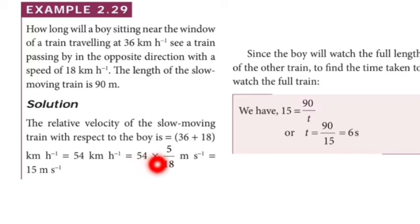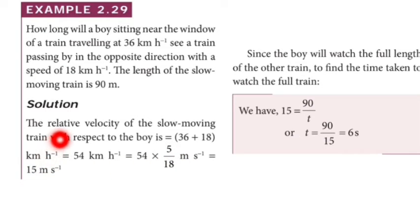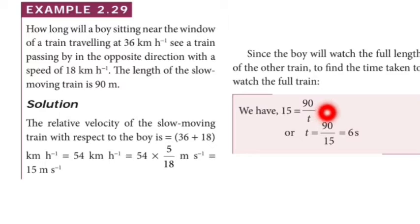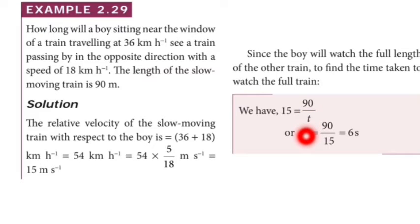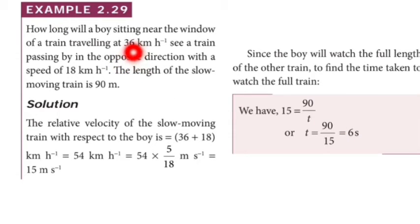Simplifying 54 × 1000 divided by 3600 gives 15 meter per second. This is the relative velocity V. Using velocity equals displacement divided by time, where displacement is the length of the slow-moving train (90 meters), we find T equals 90 divided by 15, which gives 6 seconds. So the boy sees the slow train pass in 6 seconds.